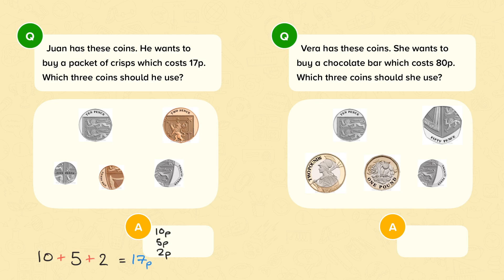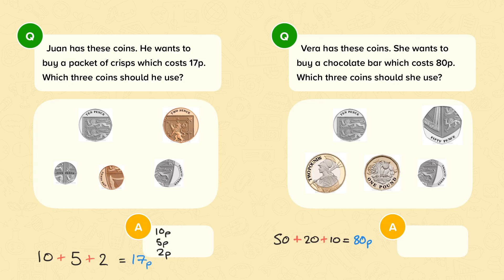Vera has these coins. She wants to buy a chocolate bar which costs 80p. Which 3 coins should she use? Why don't you pause the video now and work out which coins Vera should use. How did you get on? Vera will use the 50p coin, the 20p coin and the 10p coin. Well done if you got that.